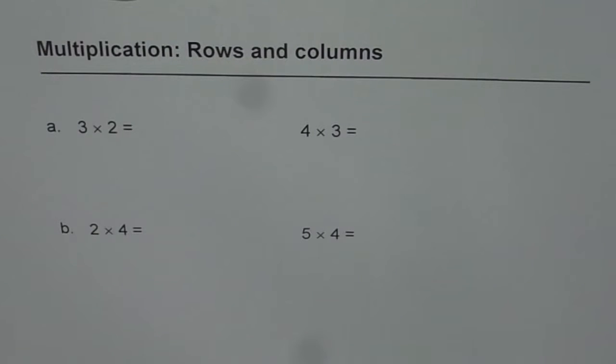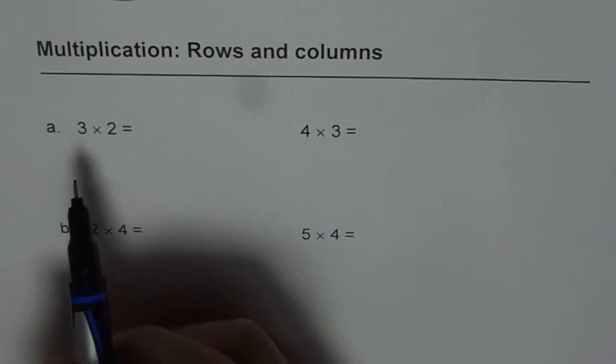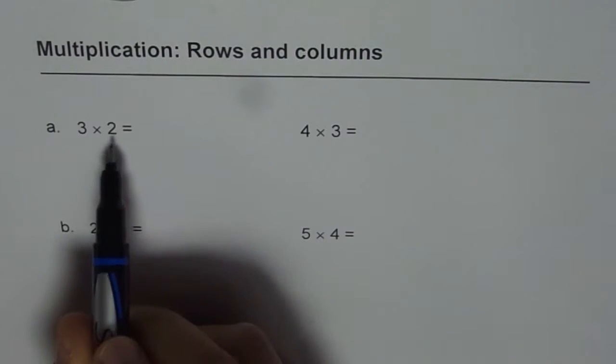Let us see how to multiply numbers using rows and columns. You know, rows and columns gives you product. When you multiply two numbers, what you get is always product of those two numbers.